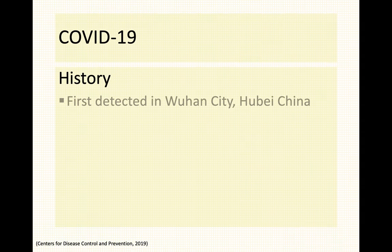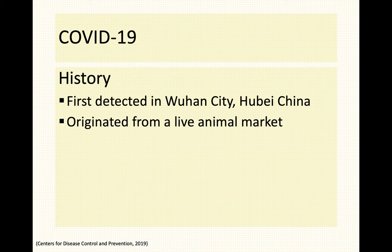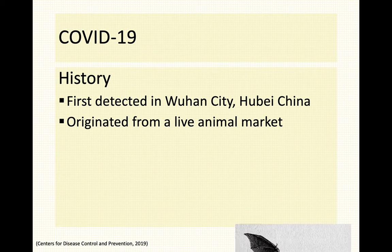COVID-19 was first detected in Wuhan City, Hubei, China around December 31, 2019. It actually originated from the live animal market in Wuhan. Wildlife consumption in China is very much rampant, but they have since stopped selling wildlife at the market. It is actually believed that bats are the reservoir or vector of your SARS coronavirus 2.